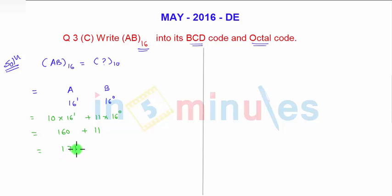So the number is 171 in decimal. But we want the BCD number of it, that is the binary coded decimal. So this is the decimal representation of the given number and in binary coded decimal we have to represent each decimal digit in 4 bits binary code.